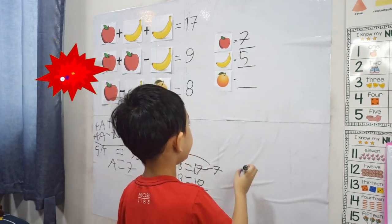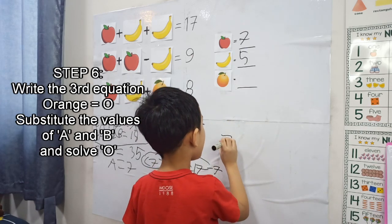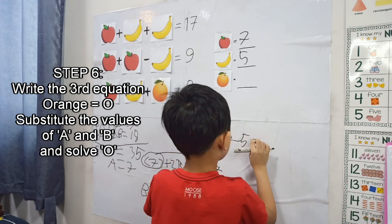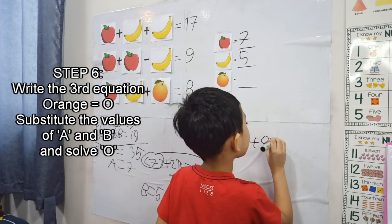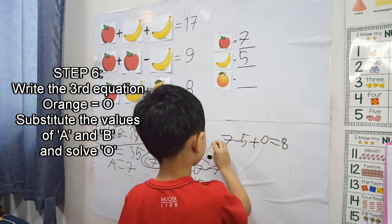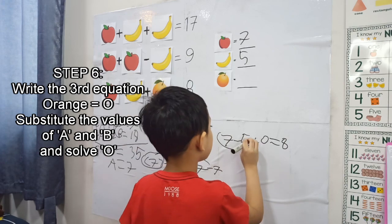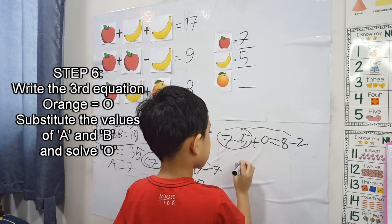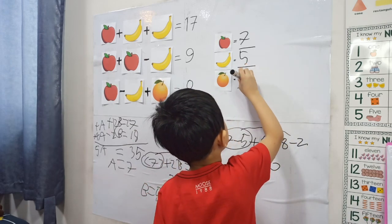And then 7 minus 5... equals 2. 7 minus 5 is 2, and this gives 1 minus 2... 0 equals 6, here.